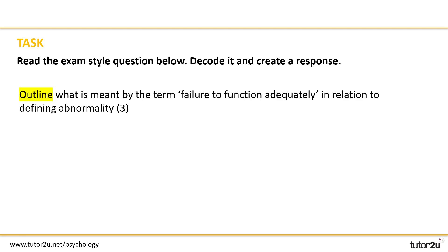Hopefully when you decoded the question you picked up on the command word 'outline.' This tells us that no evaluation is necessary — we're doing a bit more than just identifying something; we're going to give a short outline. We should also note that we're focusing on failure to function adequately. A lot of students may accidentally choose a different definition of abnormality in the stress of the exam. Abnormality is a key word here — we don't want to answer with examples about normality. The question is also worth three marks, which indicates how much we need to do to earn those marks.